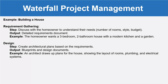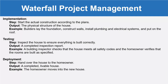Then the implementation phase begins, where we start actual construction according to the plans. The physical structure of the house is produced — for example, builders lay the foundation, construct walls, install plumbing and electrical systems, and put on the roof. Then the testing phase comes, where we inspect the house to ensure everything is built correctly and working properly. The output is a completed inspection report — a building inspector checks that the house meets all safety codes and the homeowner verifies the rooms are built as specified.